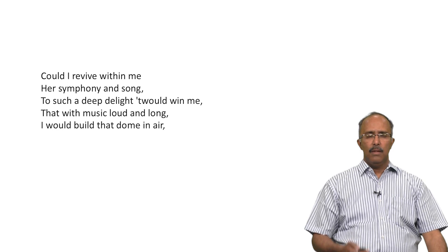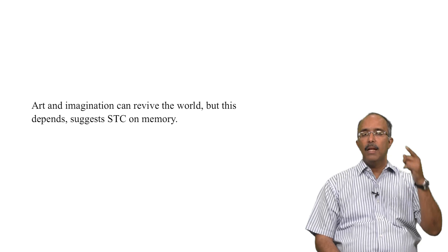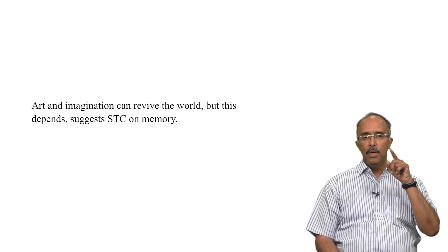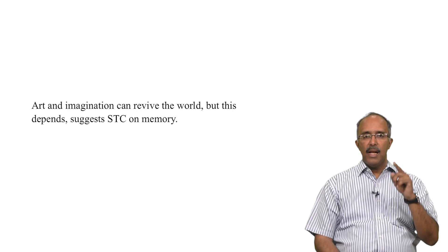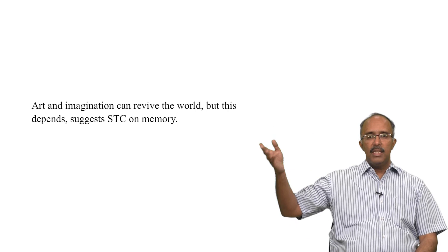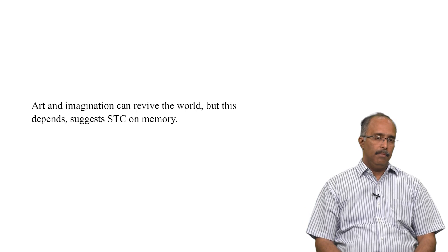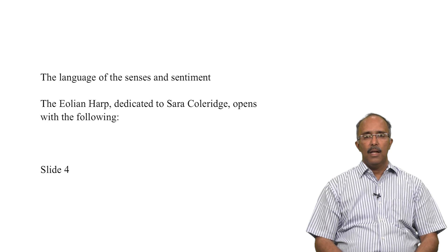'Could I revive within me her symphony and song? To such a deep delight would win me, that with music loud and long, I would build that dome in air.' If I can revive the song — recalling that art and imagination — I can build a dome. What he is saying is: it is art and imagination that can revive the world, not the diktat or the rule or order from Emperor Kubla Khan. But this depends, suggests Coleridge, on memory. The languages of the senses and sentiment are clearly central to Coleridge as well.